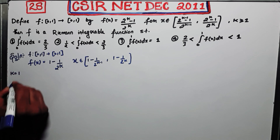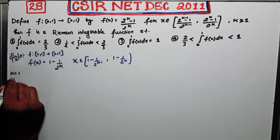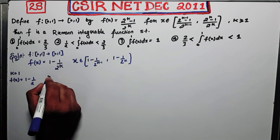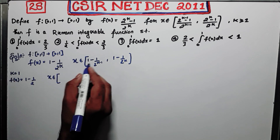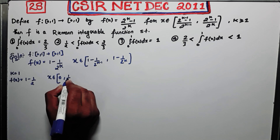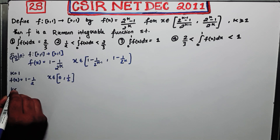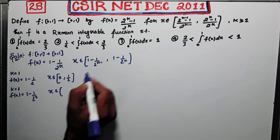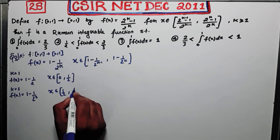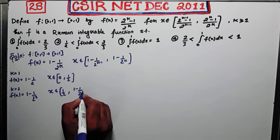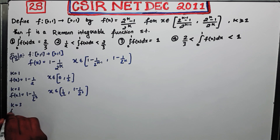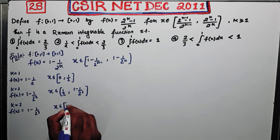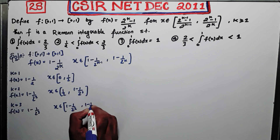Let us put k equal to 1. If you put k equal to 1 then your function is (1 - 1/2^1), but more importantly, what will be your domain. Putting k equal to 1 gives the domain from 0 to 1/2. Now put k equal to 2: you get the function over the domain from 1/2 to 1 - 1/2^2. If you put k equal to 3, you get the function value (1 - 1/2^3) and x belonging to [1 - 1/4, 1 - 1/8].